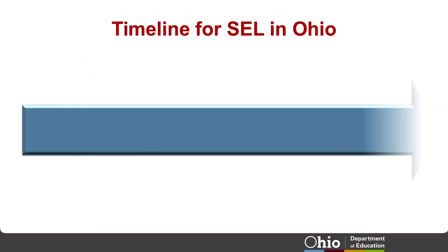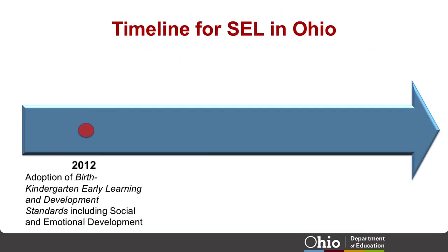In 2012, the State Board of Education adopted the Early Learning and Development Standards for Children's Birth to Kindergarten Entry. These standards include the Social and Emotional Development Domain that addresses the skills, knowledge, and behaviors that children develop within awareness and expression of emotion, self-concept, self-regulation, sense of competence, and relationships with others. The Ohio Department of Education provides guidance and professional development around these standards, including implementation guides for teachers.